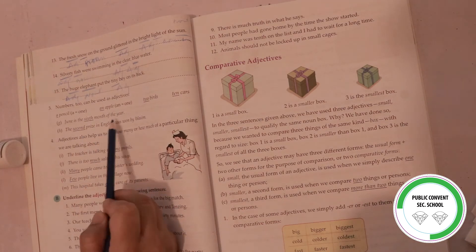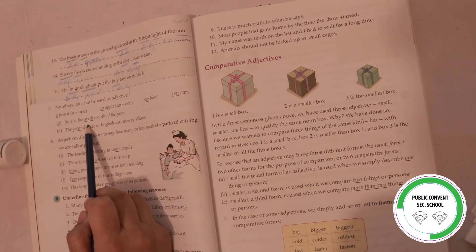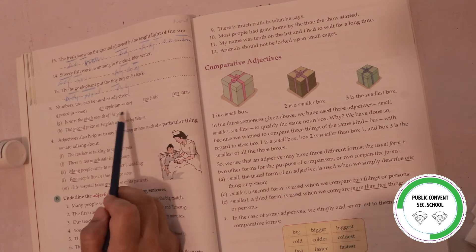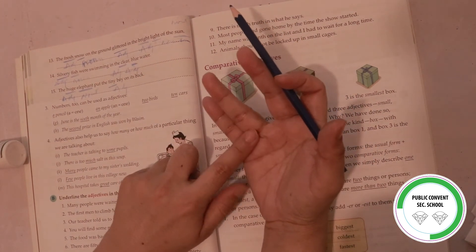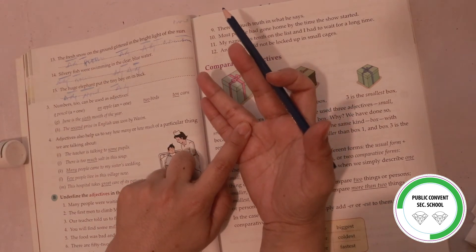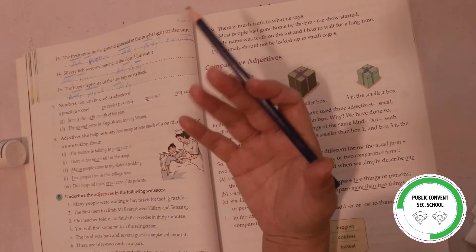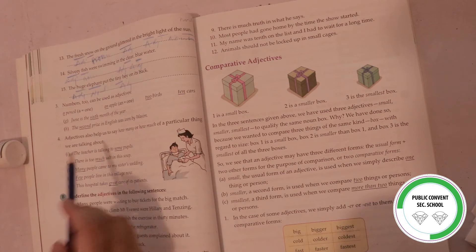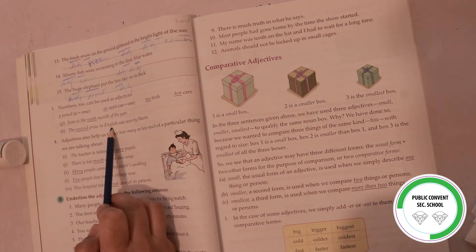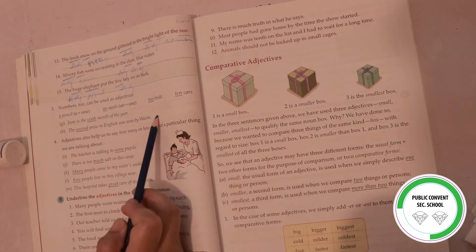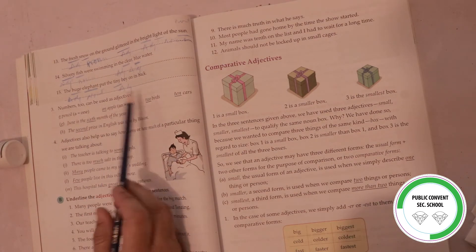June is the sixth month of the year. January, February, March, April, May, June - June is the sixth month of the year. How many months are in a year? 12, and June is the sixth month. The second prize in English was won by Wasim. Second prize.